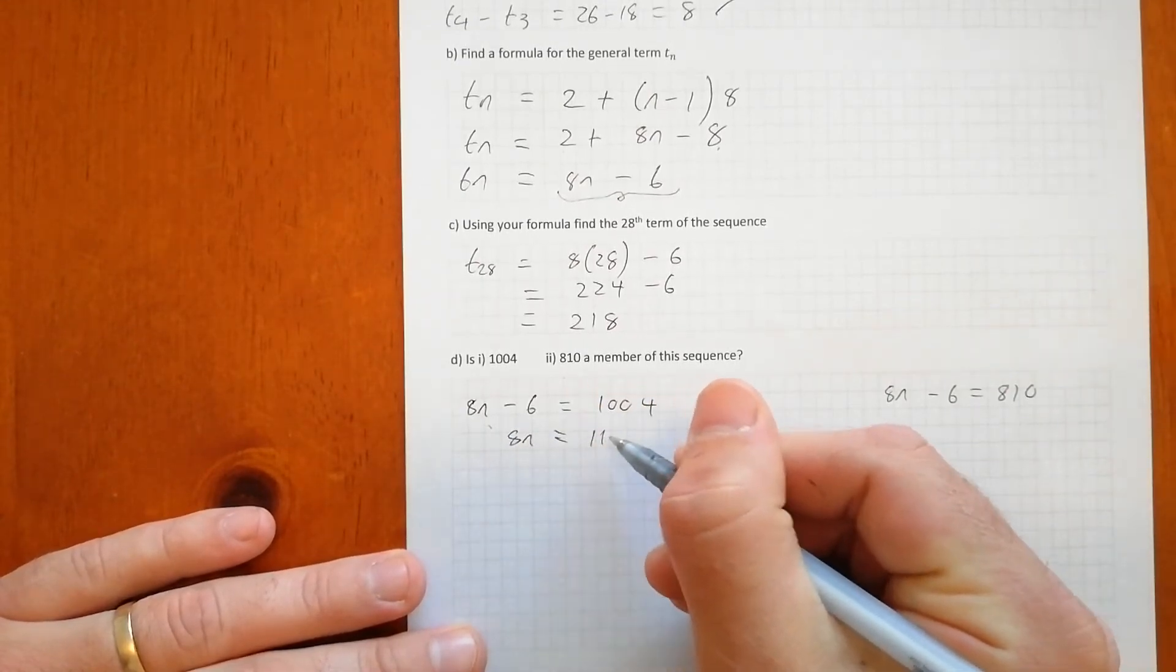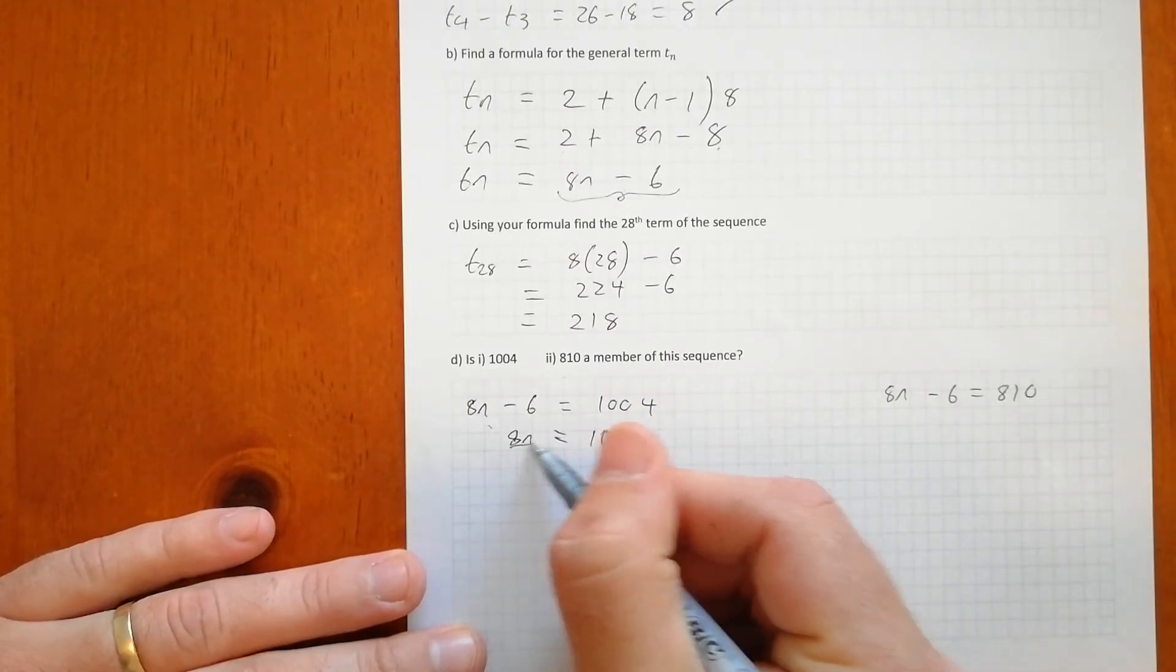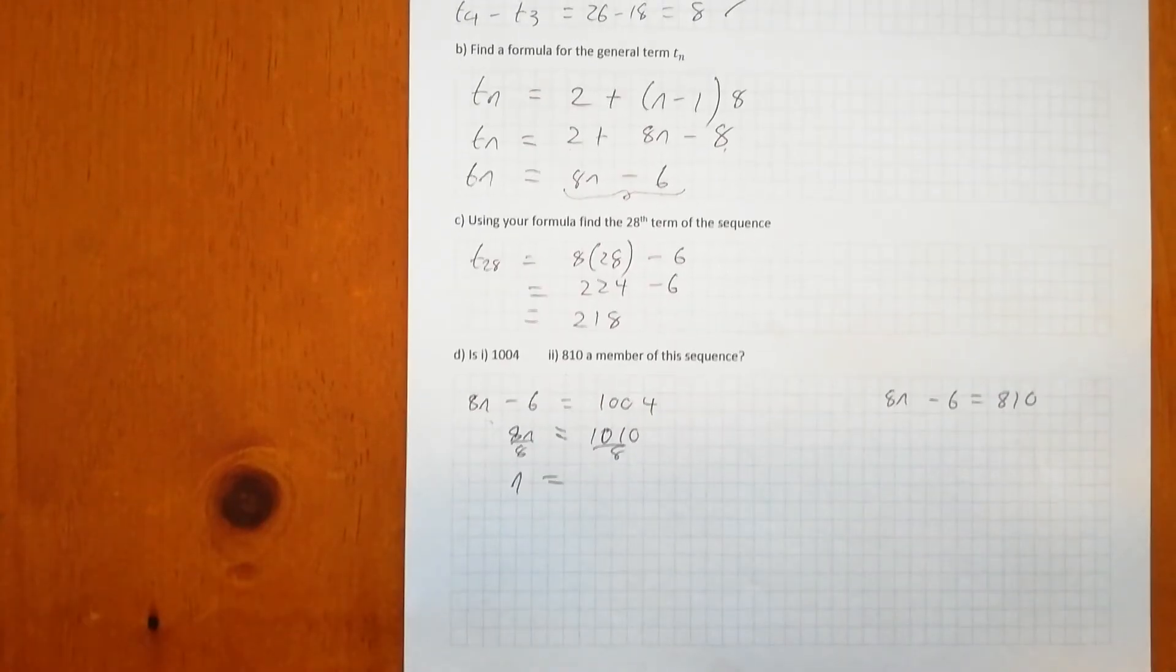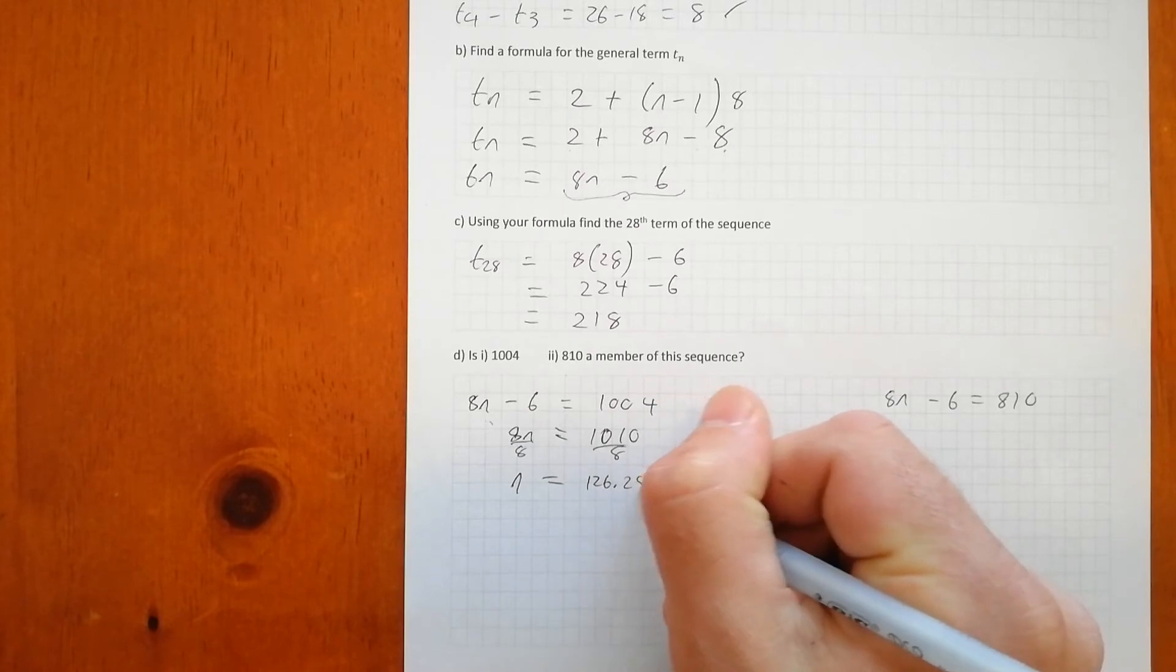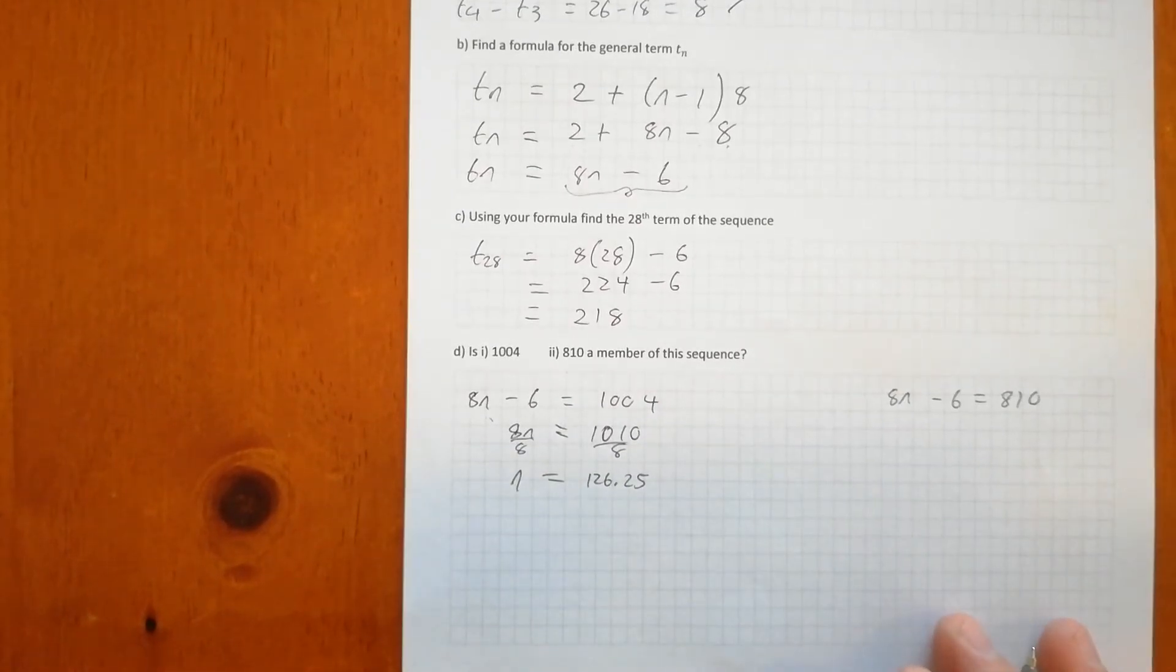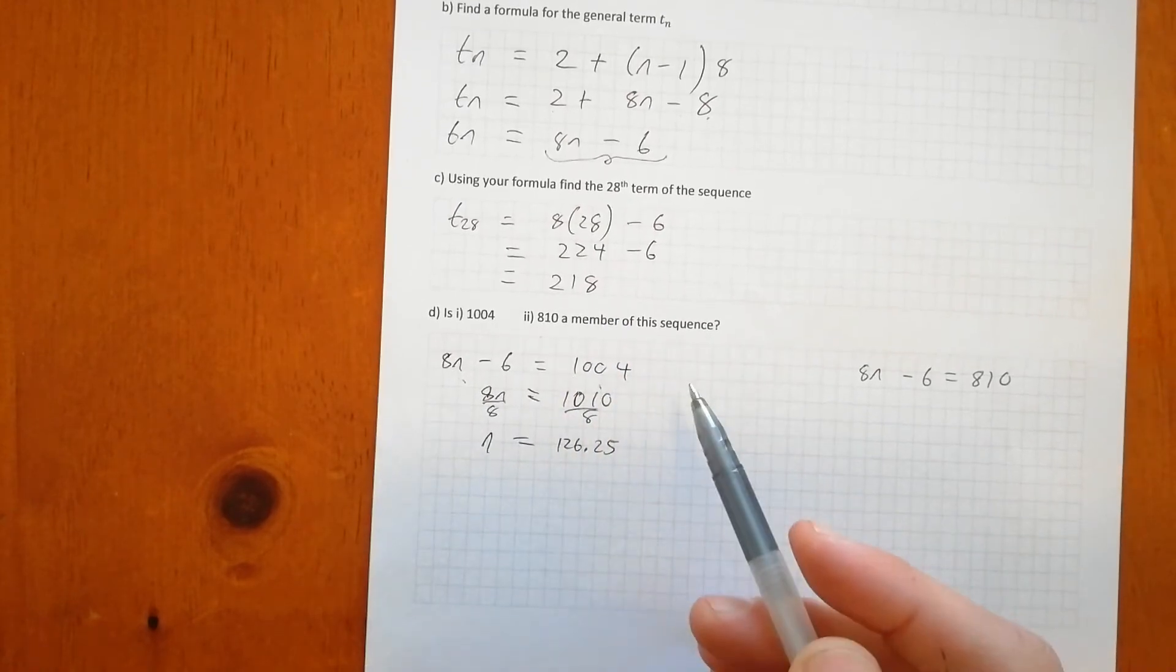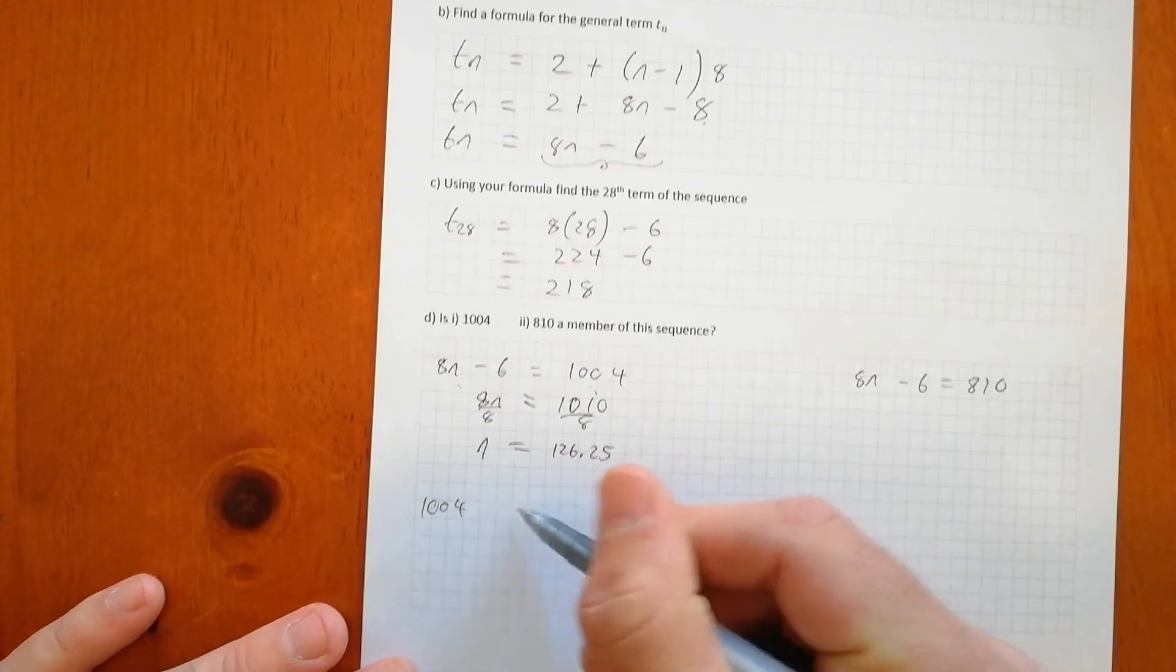Well, let's solve it. We've got 1,010, and then we're going to divide both sides by 8 to get n by itself. And if we perform this, we've got 126.25. And this is not a whole number, which tells us n doesn't flow in evenly to 1,004, which means 1,004 is not a member of our sequence. Not a member.